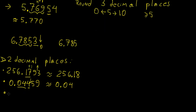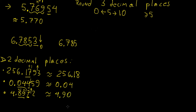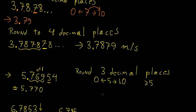Next example: 4.8972 rounded to two decimal places. The two decimals are 8 and 9, and the next digit is 7, which is closer to 10, so we round up — adding 1 to the 9. Since 9 plus 1 is 10, we carry over and add 1 to the 8, giving 4.90.